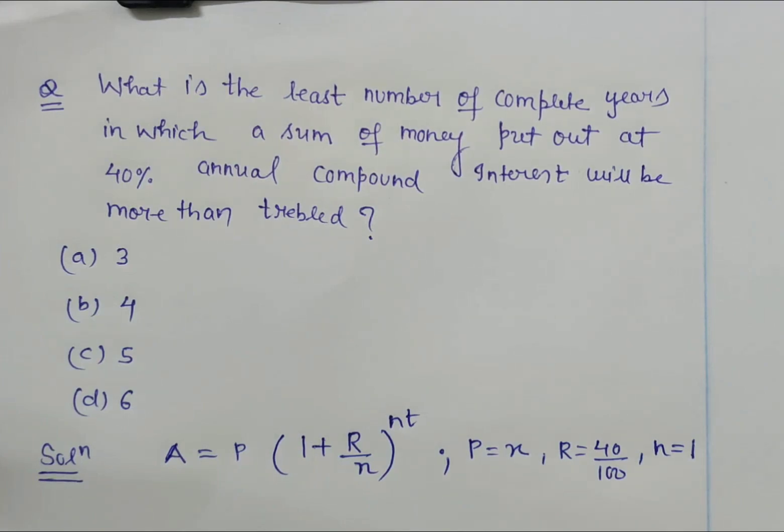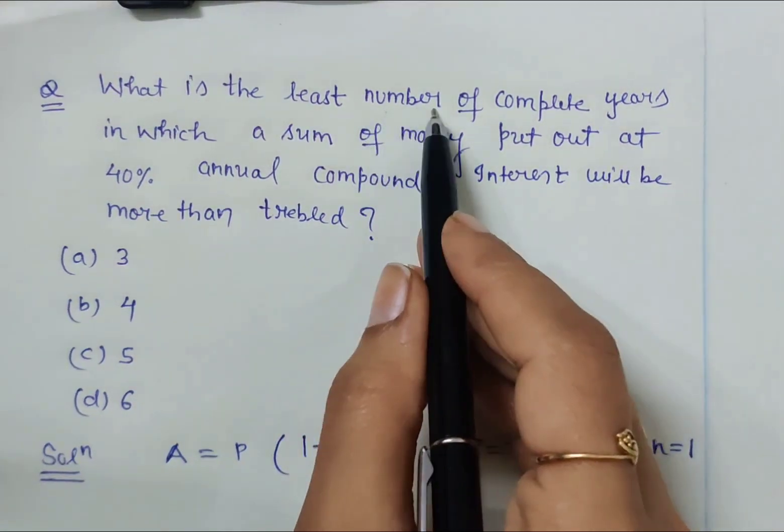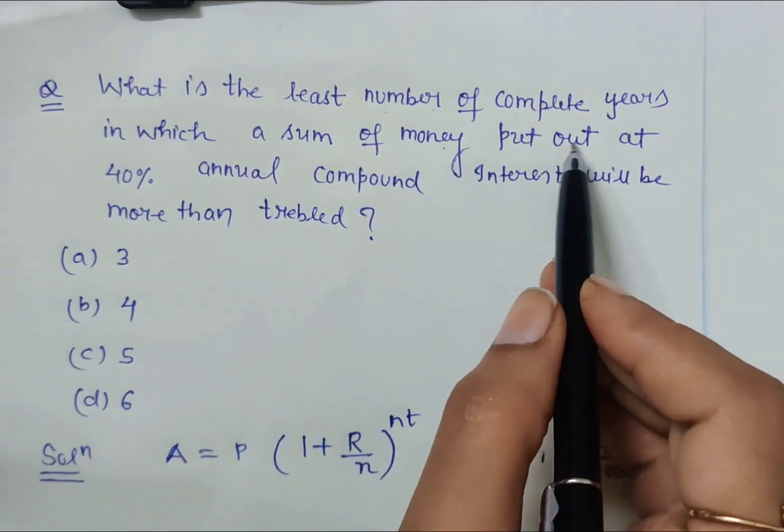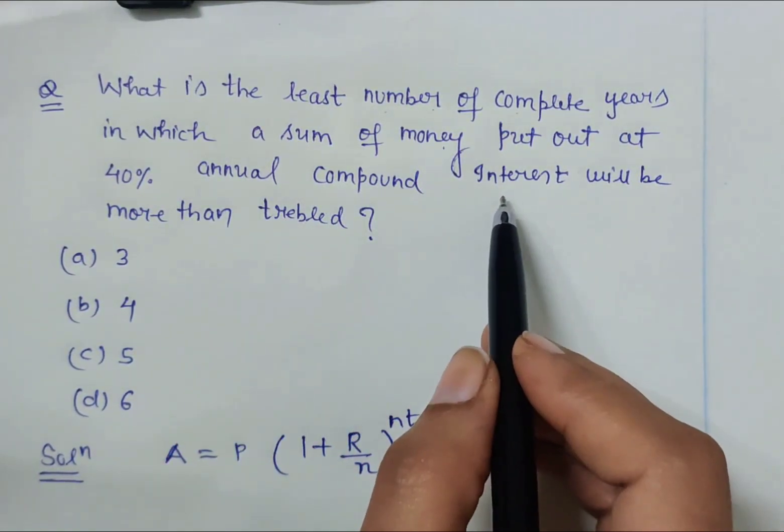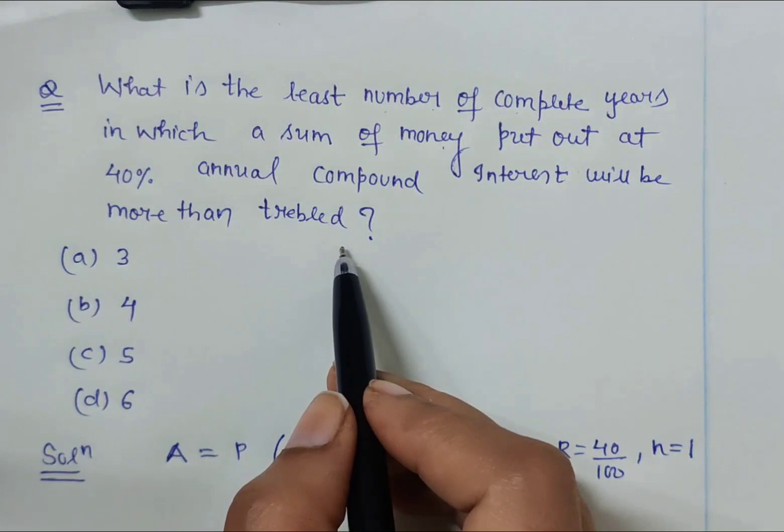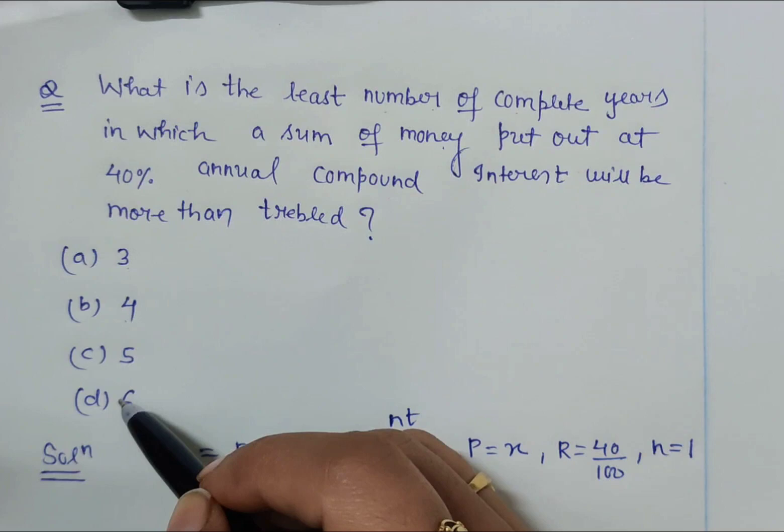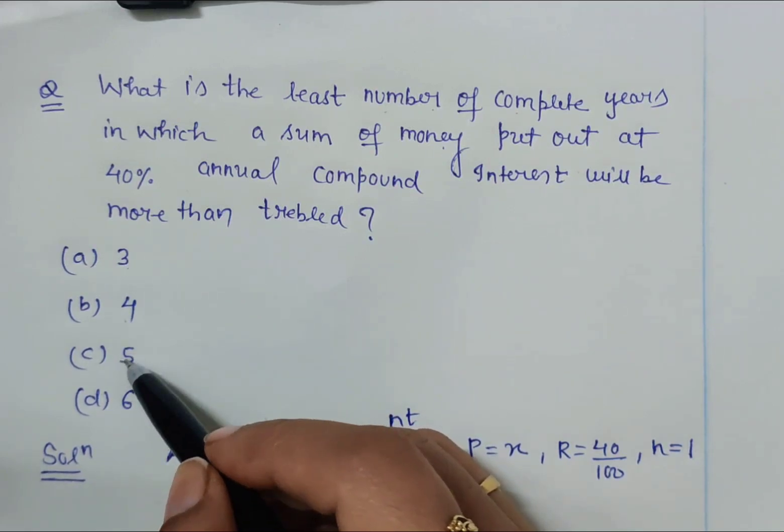Hello friends, this is another question for CDS examination 2019. The question is: what is the least number of complete years in which a sum of money put out at 40% annual compound interest will be more than tripled?